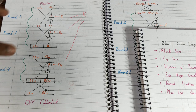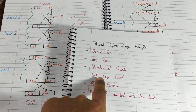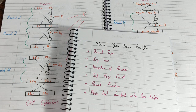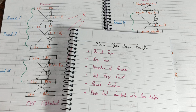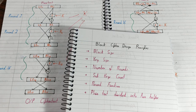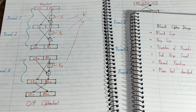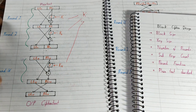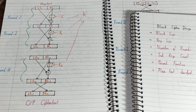Next is the number of rounds. The number of rounds depends on the user's needs and the importance of the data. If your data needs very high security, you increase the number of rounds; if less security is needed, you keep it at an optimum number. Increasing the rounds increases the complexity of the ciphertext, providing more safety from cryptanalysis or being hacked. Next is subkey count — the number of subkeys equals the number of rounds. The round function is also a design principle; it is what alters the data, and I'll explain it in detail in the DES video.